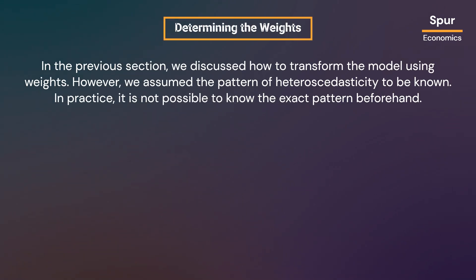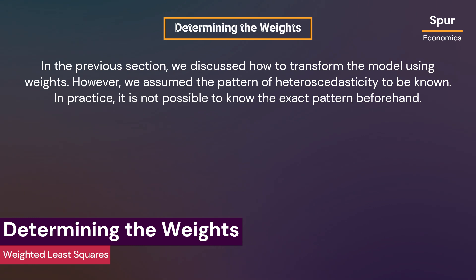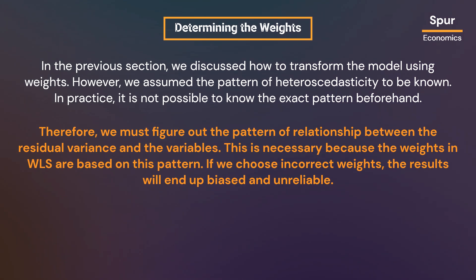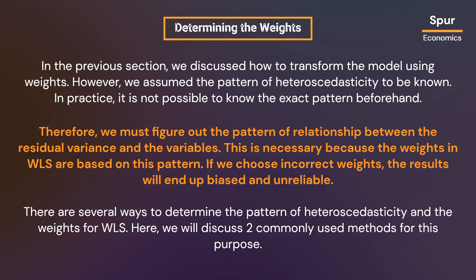In the previous section, we discussed how to transform the model using weights. However, we assumed the pattern of heteroskedasticity to be known. In practice, it is not possible to know the exact pattern beforehand. Therefore, we must figure out the pattern of relationship between the residual variance and the variables, since the weights in WLS are based on this pattern. If we choose incorrect weights, the results will end up biased and unreliable. There are several ways to determine the pattern of heteroskedasticity and the weights for WLS, and here we will discuss two commonly used methods.